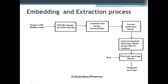In the extraction process, we receive the image with hidden data. The image is again divided into 3x3 blocks and partitioned horizontally. We locate indicator blocks, extract the encrypted message blocks from the LRUD patterns, and then decrypt those message blocks using the shared key to recover the original message.